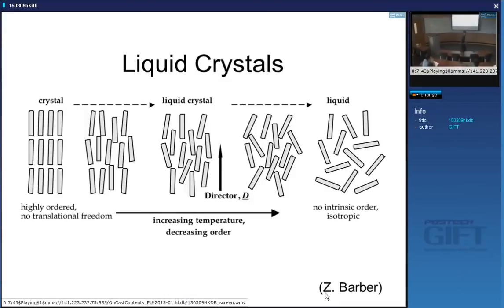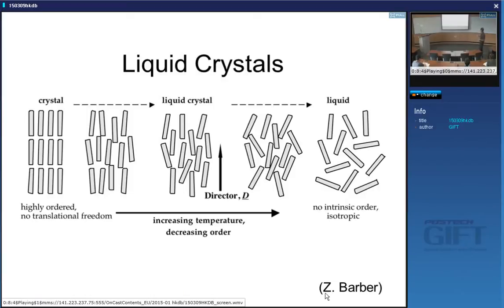The definition of a liquid is that it can't support a shear stress — that means it flows. In a liquid crystal, the elongated molecules can slide past each other, so it is a liquid, but you can clearly see there is some order in the arrangement of molecules — it's a liquid crystalline material. There are different kinds of liquid crystalline materials.